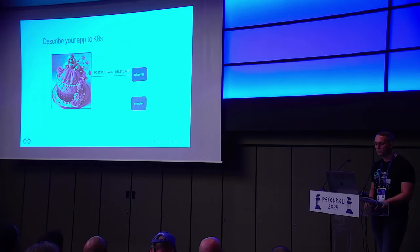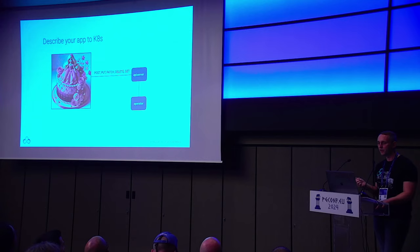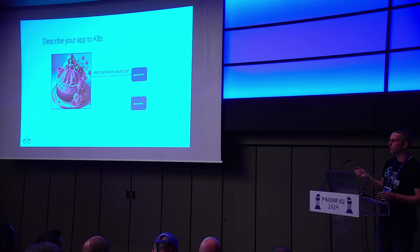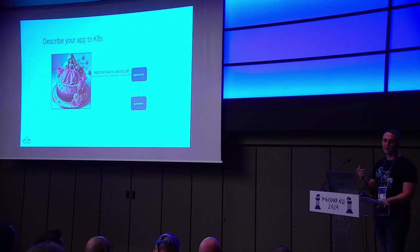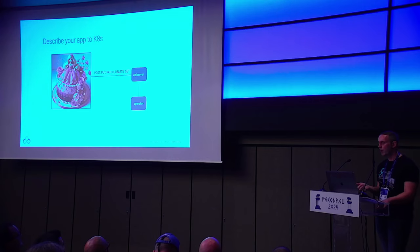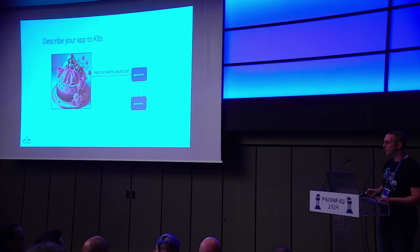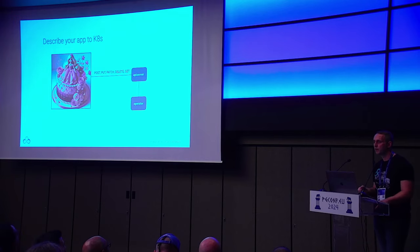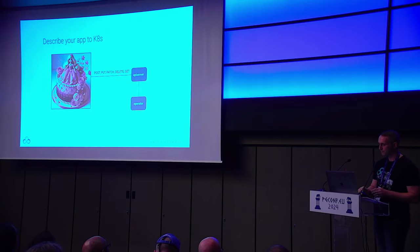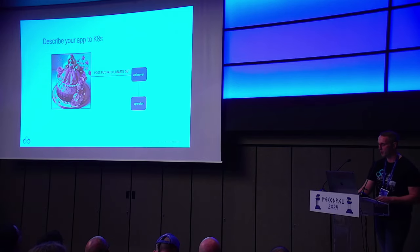One last level-set is a mindset shift: declarative versus imperative. Imperative is all the runbooks DBAs have used — here's how you set up high availability, step by step. The best analogy is a chocolate cake. You could drive to the store, buy flour, cocoa, sugar, butter, eggs, set the oven to 350 degrees, and go through all the steps — or you could tell the baker 'we want a chocolate cake with a Barbie on it' and they produce one. That's the declarative way. As Postgres people, we just tell Kubernetes 'we want instances: three' — which infers one primary and two standbys.